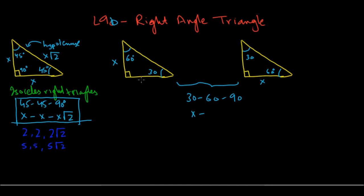The side opposite to 60 would be X√3 — something you need to memorize. And the side opposite to the 90 degree, the hypotenuse, would be 2X. So everything goes by X: the side opposite to 30 is X, the side opposite to 60 is X√3, and the hypotenuse opposite to 90 is 2X.